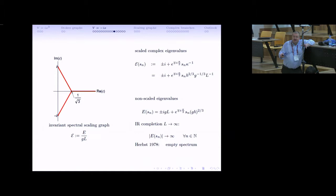Once we have this relation, we can immediately look at what happens in the case of infrared completion—taking the interval to infinity. We multiply the scaling graph by the corresponding pre-factor. What we get is that the modulus of all these eigenvalues shifts to infinity; the graph blows up to infinity, leaving an empty region. This is just the empty spectrum derived by operator-theoretic methods in 1978 by Herbst—the well-known result.